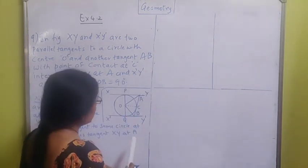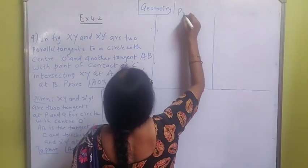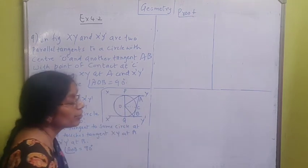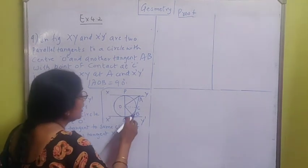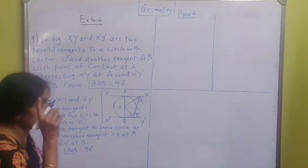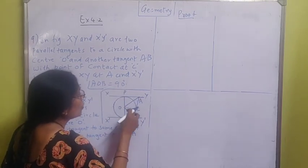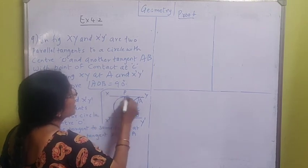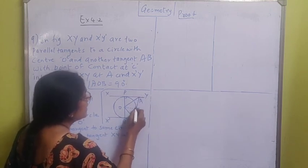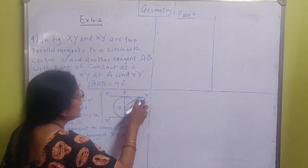So the proof is divided into parts because we are going to compare triangles. First, we will prove that triangle OPA and triangle AOC are congruent. In second, we will prove that triangle BOC and triangle BOQ are congruent. In triangle AOP and triangle AOC: OP is the radius and XY is the tangent, so that angle is 90 degrees. OC is the radius and AB is the tangent, so that angle is also 90 degrees. Therefore angle OPA = angle OCA = 90 degrees.